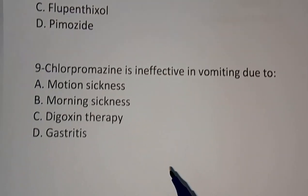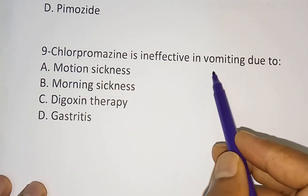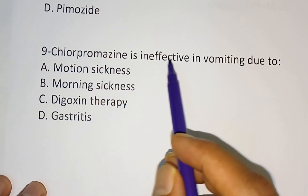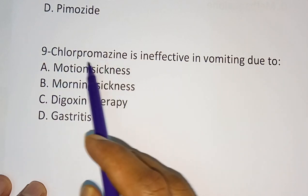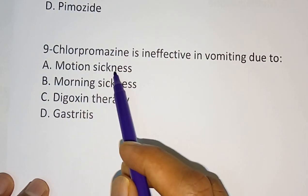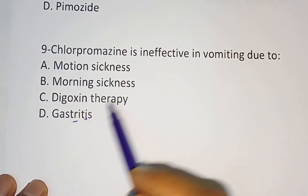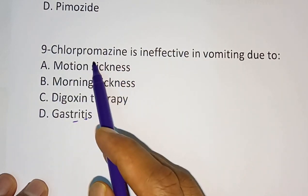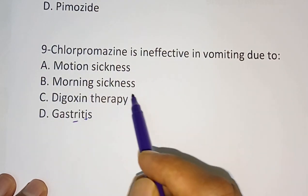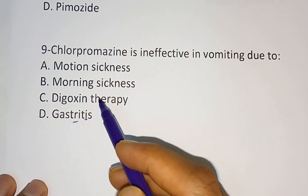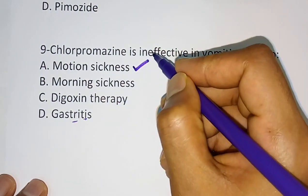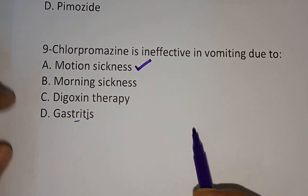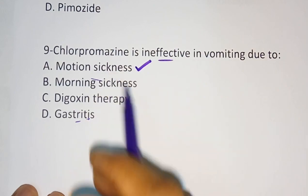Question 9: Chlorpromazine is ineffective in which type of vomiting? Chlorpromazine is usually useful in vomiting, but in one type it is ineffective. Options are: motion sickness, morning sickness, digoxin therapy, gastritis. The correct answer is motion sickness. In case of motion sickness we use dimenhydrinate. Chlorpromazine is ineffective in vomiting due to motion sickness.